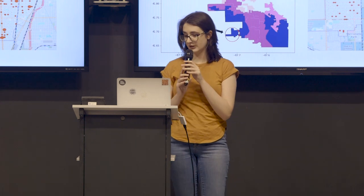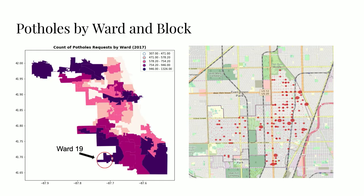There are two charts on this slide. On your left is a graph of pothole concentration by ward — darker colors are the highest concentration. On your right is a graph of Ward 19's potholes mapped to the nearest street intersection. We used a similar approach in that we mapped all of our potholes to the nearest street intersection, so in the graph it would be the nodes.